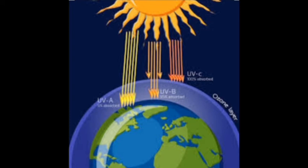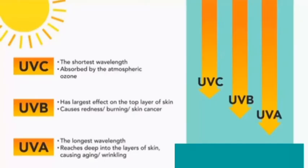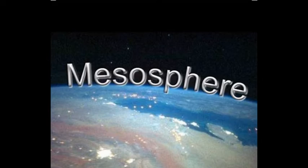The sunlight that reaches us is made up of three types of rays: UVA, UVB, and UVC. Long wavelength rays are called UVA, and short wavelength rays are called UVB and UVC. UVA and UVB are the rays that harm our skin. UVC rays do not penetrate through the ozone layer, so we need not worry about those rays.